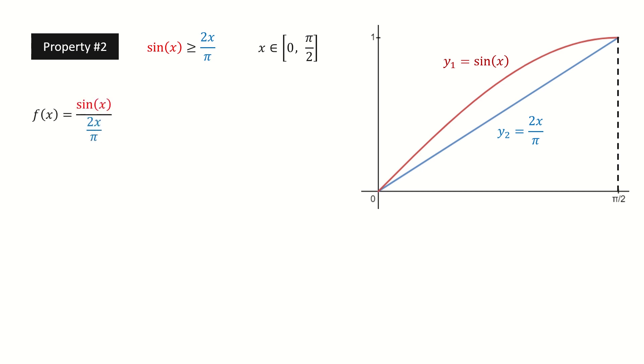First, we define function f here. So it's equivalent to show the function f is greater than or equal to 1. Because we haven't proved it, we put a question mark here. First, we check the two endpoints for this interval. At 0, we can calculate the limit by using L'Hôpital's rule, and it equals 1. At pi over 2, the function f equals 1. So if we can prove the function f is monotonic decreasing on this interval, then we are done.